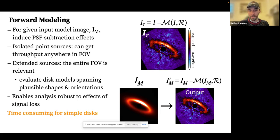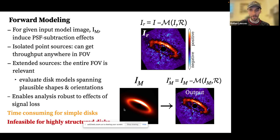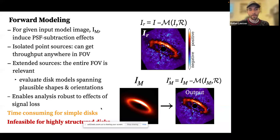Forward modeling is extremely time-consuming, but worse, it's totally infeasible for highly structured disks. Imagine a complicated spiral-arm disk requiring detailed hydrodynamical simulations — hours or days per model — with 50 parameters to tune. This is compounded when using IFS data, where we have to do this across a huge array of wavelengths. This is a significant limitation for our ability to study young, structured disks using state-of-the-art IFS with extreme AO or space-based data.